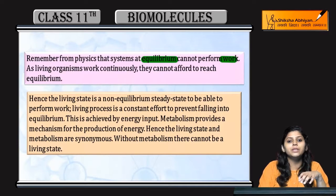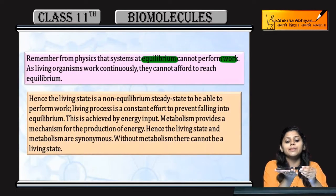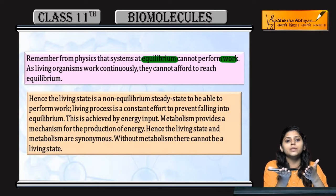If a system is not at equilibrium, it can perform work. For example, consider a pen — it might require equilibrium, but a non-equilibrium system is what allows work to be done.